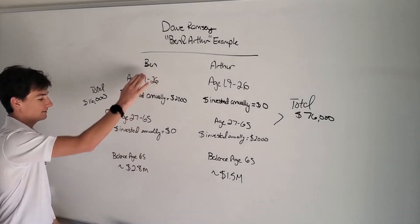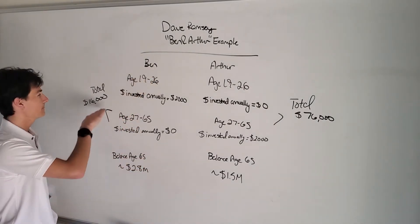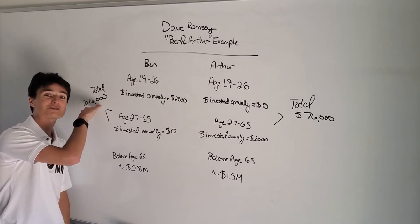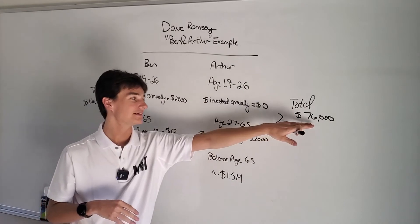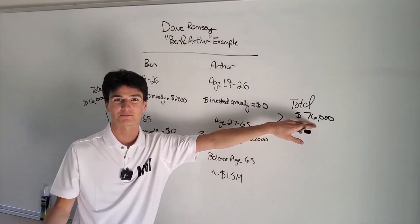Ben, by age 65, invested $16,000 of his own money. Arthur, by age 65, invested $76,000 of his own money.